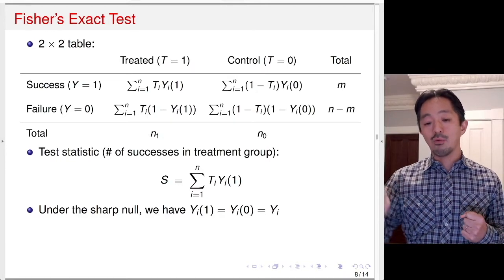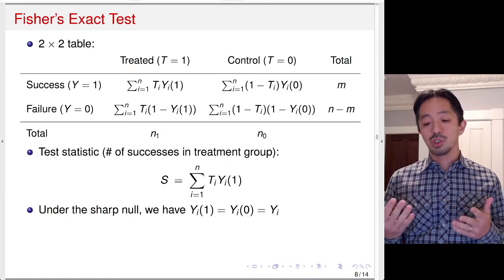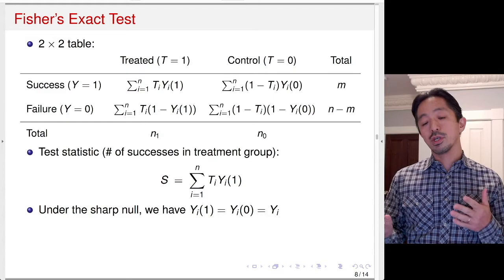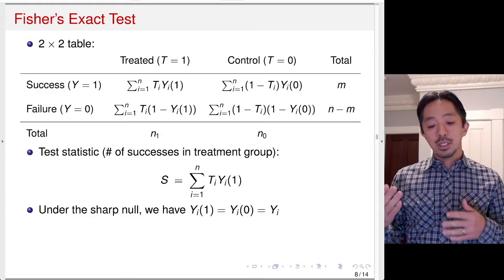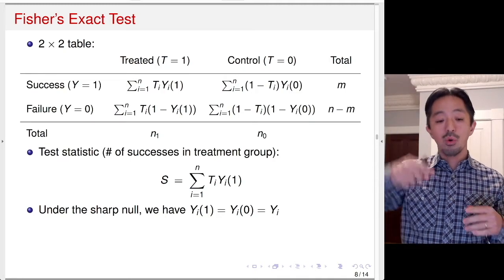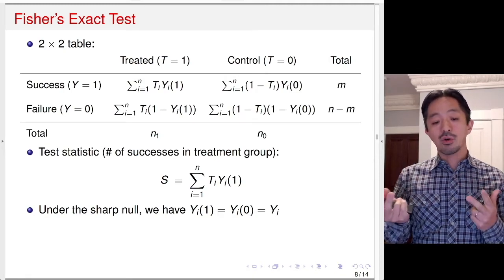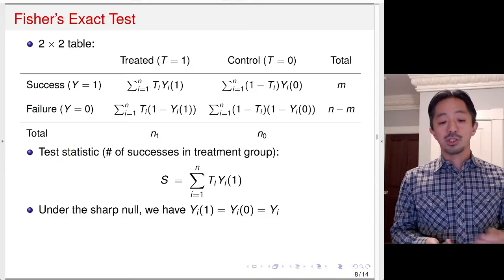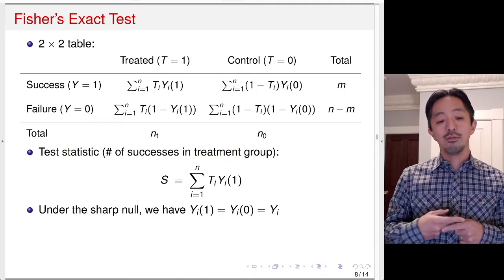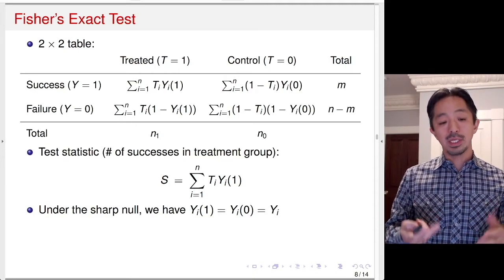Under the sharp null hypothesis, Y(1) always equals Y(0) for every observation, and equals the actually observed outcome. If you're in the treatment group, Yi(1) equals Yi. If you're in the control group, under the sharp null Yi(0) equals Yi(1), so the observed outcome can serve as Yi(1) as well. We know both potential outcomes for everyone under the sharp null. All we do is change the treatment assignment and count successes in the treatment group for each hypothetical assignment — this gives the distribution of the test statistic.